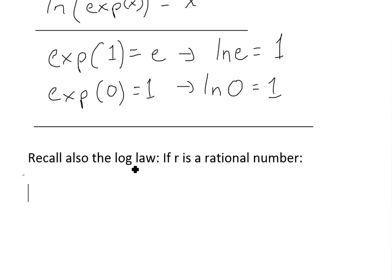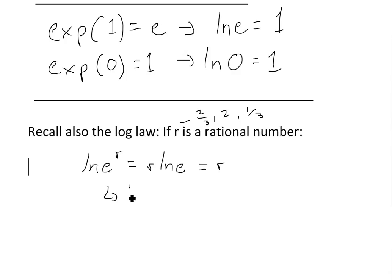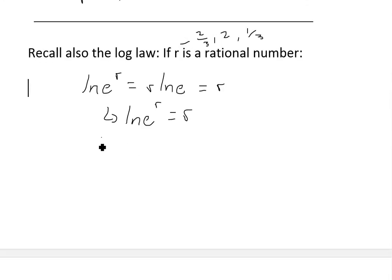Another requirement comes from the log law I covered in my earlier video: if r is a rational number, then ln(e to the r) equals r times ln(e), and since ln(e) equals 1, this just equals r. So ln(e^r) equals r. When we write it in terms of the inverse exp function, we get the requirement that exp(r) equals e to the r for rational r.